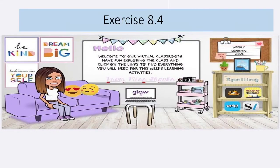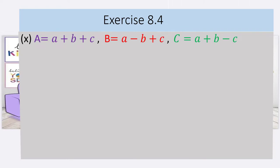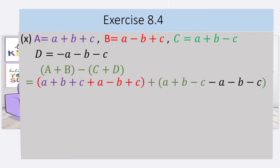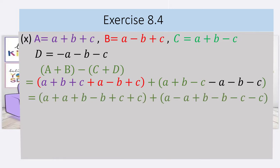Now we will discuss Exercise 8.4, Question Number 5, Part Number 10. A equals a plus b plus c, B equals a minus b plus c, C equals a plus b minus c, D equals minus a minus b minus c, and we have to find A plus B minus C plus D. In this expression we have to solve all four terms. I have shown all four expressions in different colors so you can easily identify which is A, B, C, and D. First we solve the brackets.